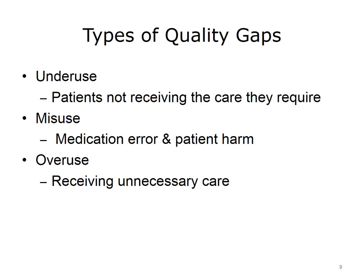These data provide evidence of gaps in the quality of care being provided. These gaps include underuse — many people do not receive medically necessary care, such as regular screening exams like mammography and prostate screening. Misuse — when patients are harmed or receive the wrong care, such as the wrong medication or hospital-acquired infections. Overuse — many patients receive care that is not needed, or for which there is an equally effective, less costly alternative, such as unnecessary diagnostic tests, sometimes referred to as defensive medicine.